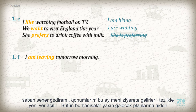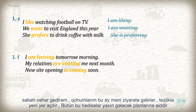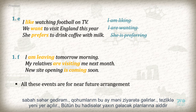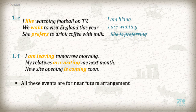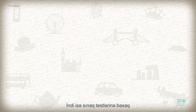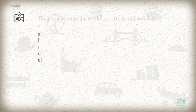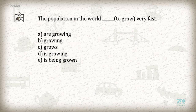1F — near future arrangements: 'I am leaving tomorrow morning.' 'My relatives are visiting me next month.' 'New site opening is coming soon.' Now let's have a trial test. Choose the right answer: 'The population in the world ___ very fast.' A) Are growing  B) Growing  C) Grows  D) Is growing  E) Is being grown. The answer is D: Is growing.